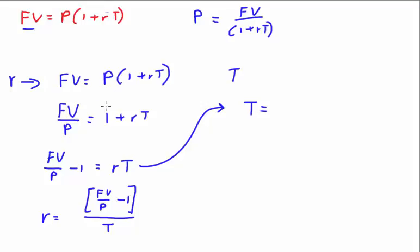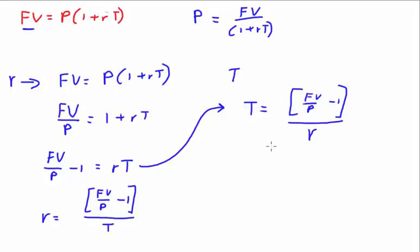To find time, go through the same steps, but instead of moving time over, move the simple interest rate over. So: T = (FV/P − 1) ÷ r. The bracket must be calculated first, then divide the whole thing by your simple interest rate. That is your formula to find time.